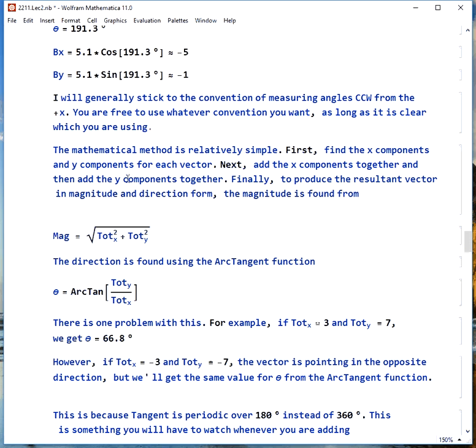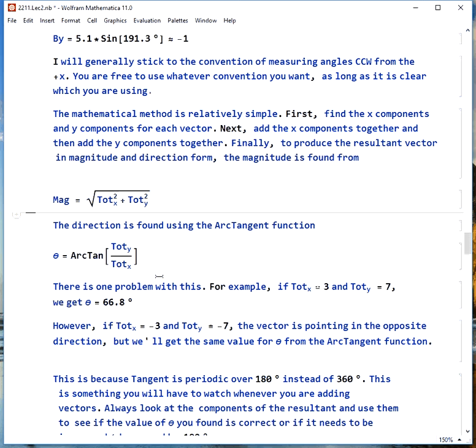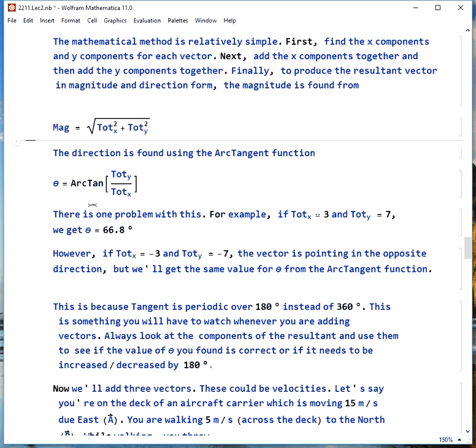The mathematical method for adding vectors is relatively simple. The first thing we do is find the x components and y components. Then we add the x stuff together. Then we add the y stuff together separately. And to make the resultant vector in both magnitude and direction form, we combine our x component total squared with our y component total squared. Take the square root. That will give us the magnitude.